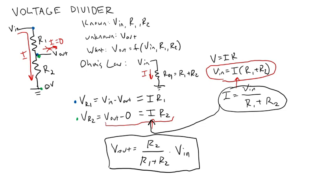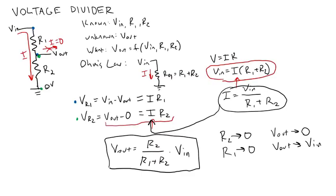And if you look at this equation and think of the limits, so as R2 goes to zero, then V out will go to zero. As R1 goes to zero, then V out is going to approach V in because the fraction approaches one.